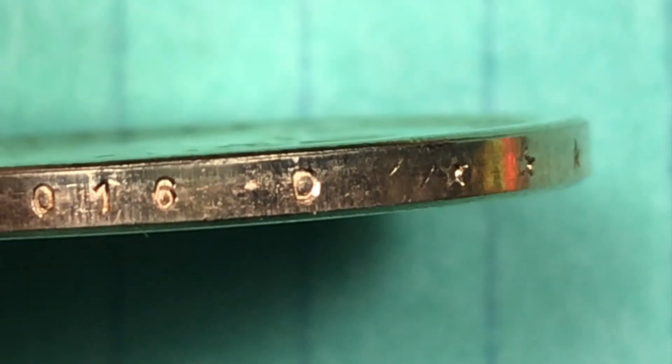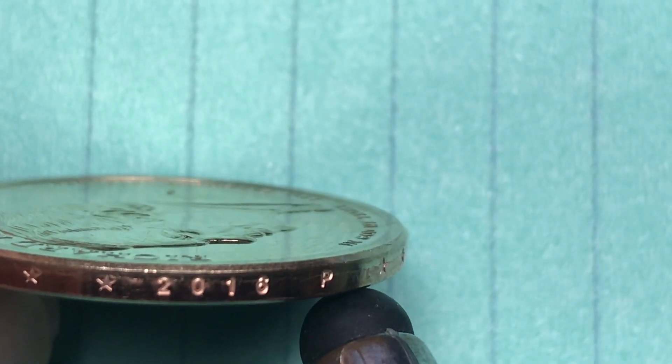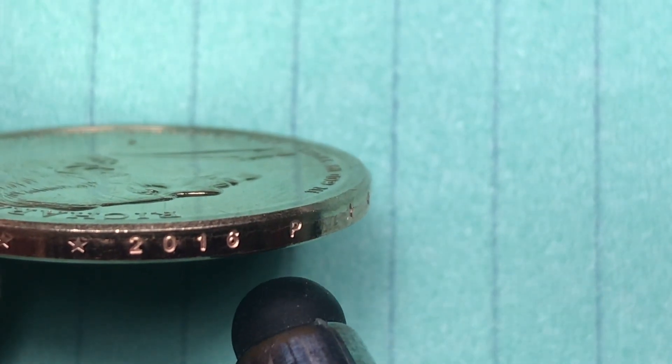And finally they made them at the San Francisco Mint, so the Proof 70 Deep Cameos with the S on them go for about $30.